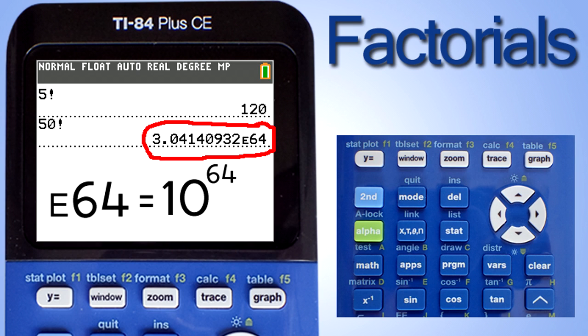Thus, you have to move that decimal point here to the right 64 places. That will make this a very large number.